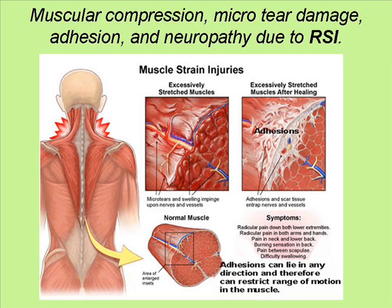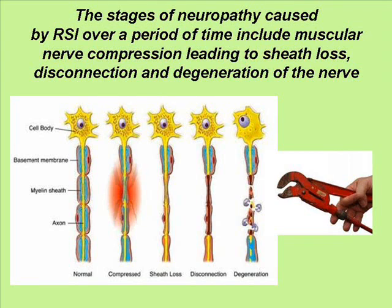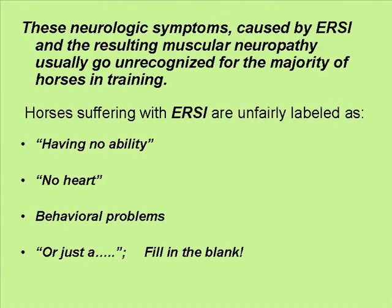This picture shows muscular compression, micro-tear damage, adhesion, and neuropathy due to RSI. These are muscular strain injuries resulting in compaction and neuropathy of the nervous system. The stages of neuropathy caused by RSI over a period of time include muscular nerve compression, leading to sheath loss, disconnection, and degeneration of the nerve. These neurologic symptoms, caused by ERSI and the resulting muscular neuropathy, usually go unrecognized for the majority of horses in training.